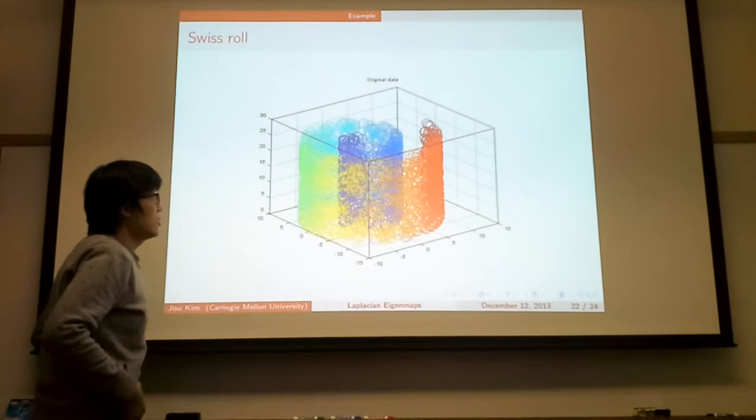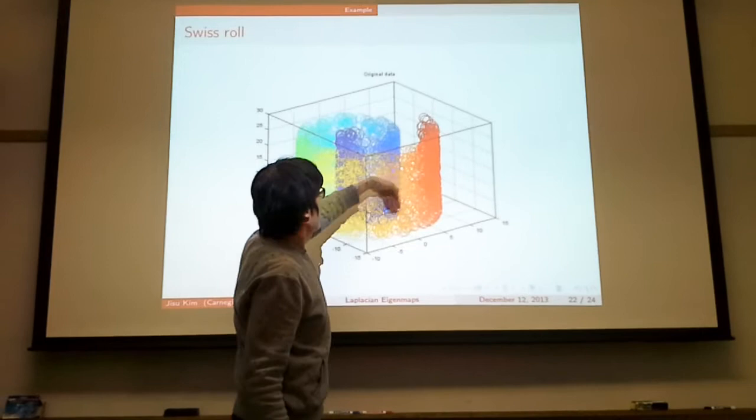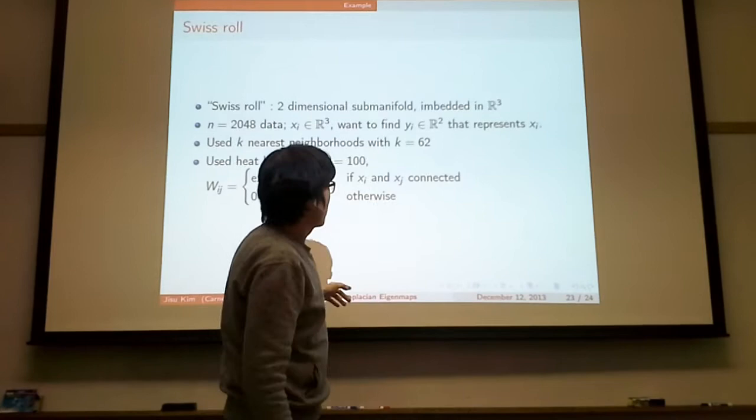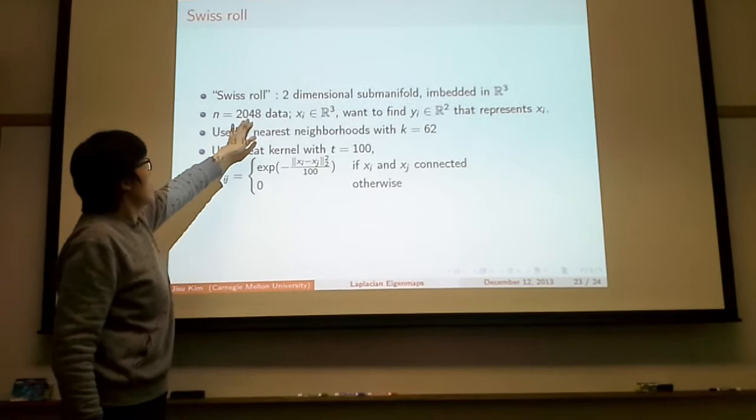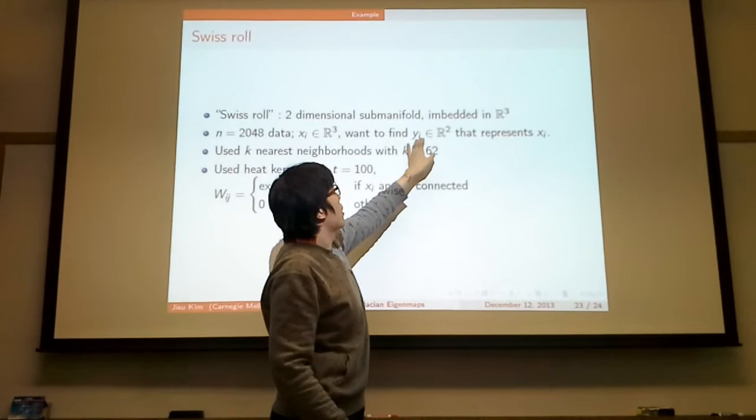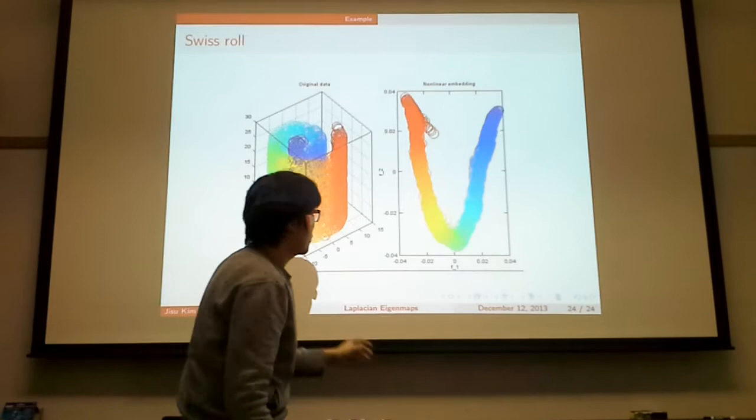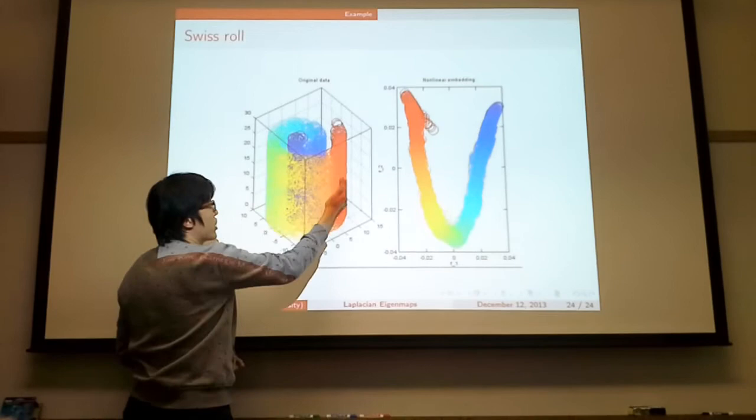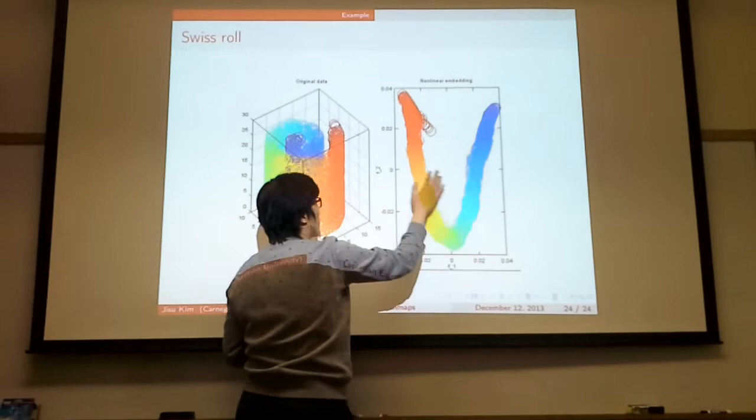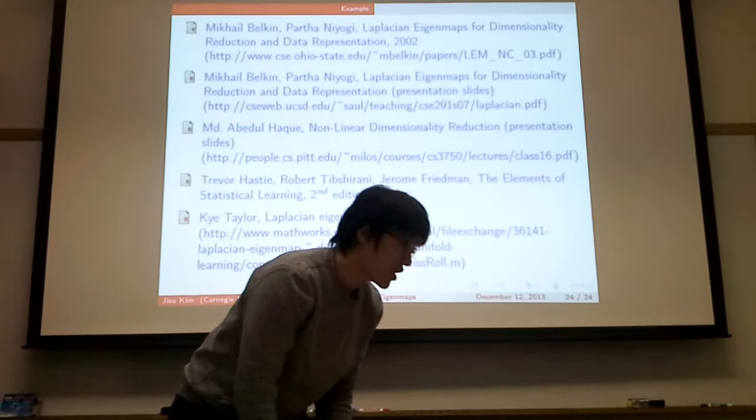I'm going to show you an example. This is called the Swiss roll. The manifold is a roll, a two-dimensional sub-manifold but embedded in R3. We have 2048 data points. Xi is in R3 and we want to find a representation in R2. I used k-nearest neighbors with k equals 12 and used heat kernel with t equals 100. The result is this. You can see the color changed from red to blue. And here also the color changed from red to blue. The coloring is somewhat reasonable, preserving the structure.